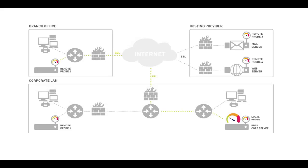All communication is initiated by the probe on a single port, so you only need to open one incoming port at your PRTG core server location. If your core server is heavily loaded, you can also use remote probes to offload the server by moving sensors from the local probe onto a remote probe, so monitoring queries are performed by a less-loaded server rather than by the core server.